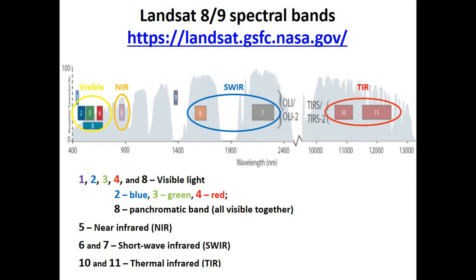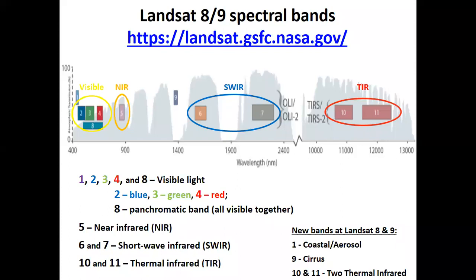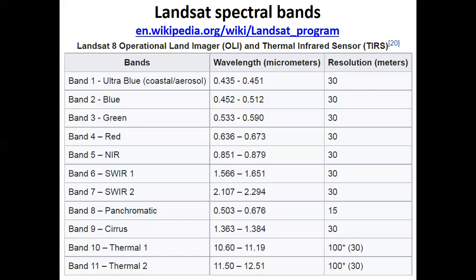This is called thermal infrared — two different modes of detection. Some other new bands are also available in Landsat 8 and 9, but we will not go deeply into that. This is a more or less basic classification of spectral bands. Each sensor records radiation with a certain wavelength separately from the rest, which is why the results are called spectral bands. For example, what is recorded by sensor number 2 or number 4 is called spectral band number 2 or number 4. This is just a list of Landsat spectral bands, easily found on the internet or the NASA website.